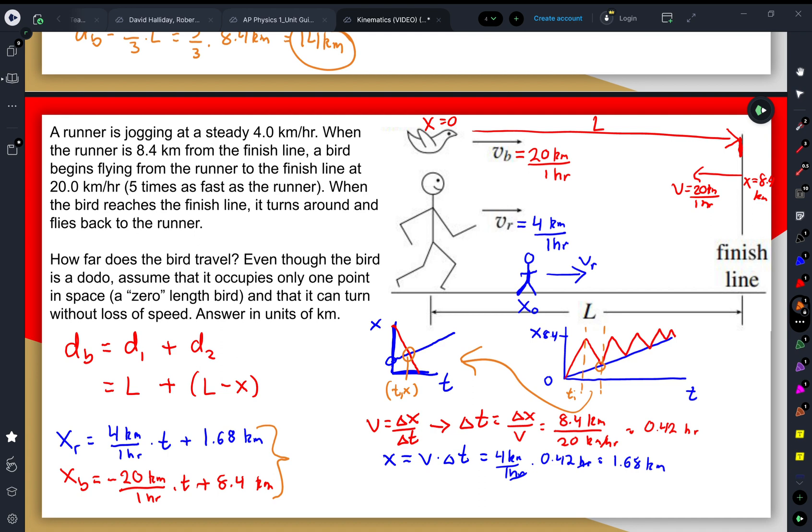Now, when I plug that in, that means that they would intersect at a time of 0.28 hours. And that would be at a position of 2.8 kilometers.